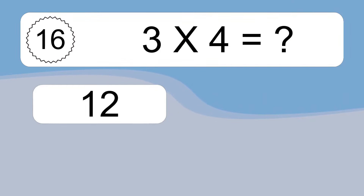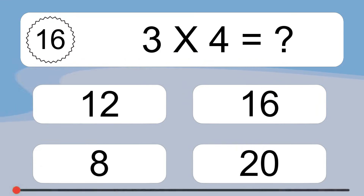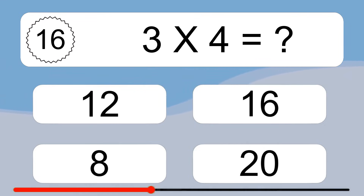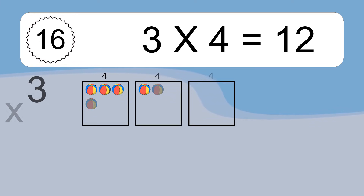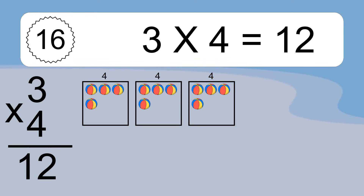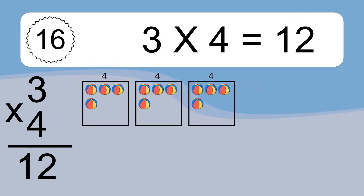3 times 4 equals what? 3 times 4 equals 12. We have 3 boxes, and each box has 4 colorful balls inside. If you count all the balls in all the boxes together, you will have 3 times 4 balls. This equals 12 balls.